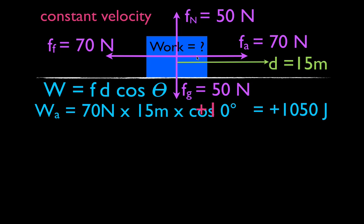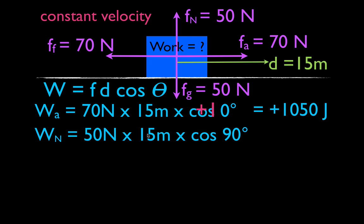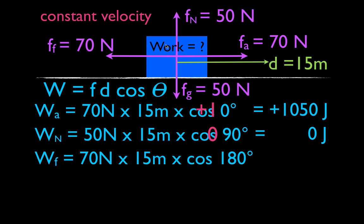What about the normal force? The normal force is upward. The angle between the displacement (to the right) and the normal force (upward) is 90 degrees. The cosine of 90 degrees is zero, so it's 50 times 15 times zero — the normal force is doing zero joules of work. For the friction force, the displacement points right and the friction force points left, so the angle is 180 degrees and cosine of 180 is minus one — friction is doing negative work, taking energy out of the system.